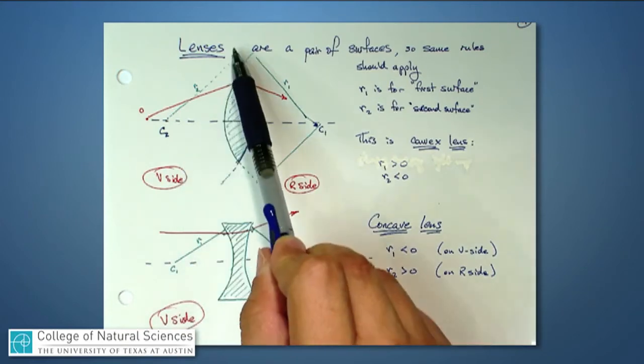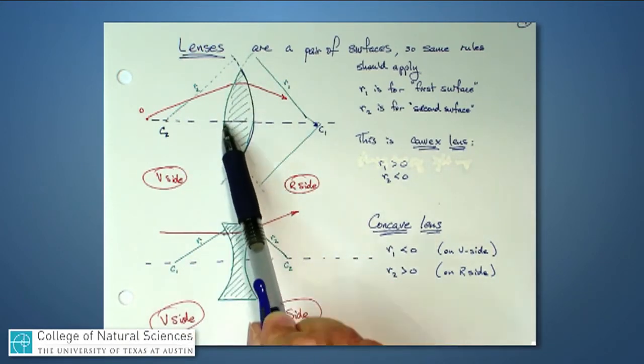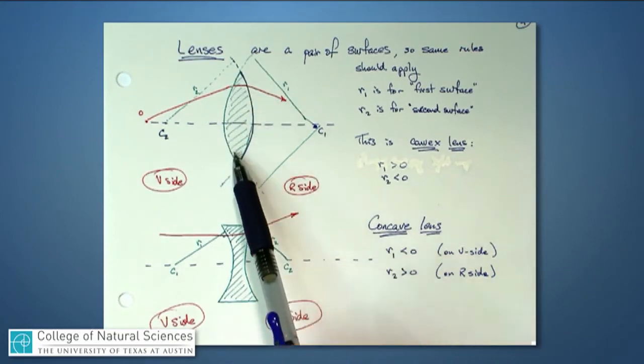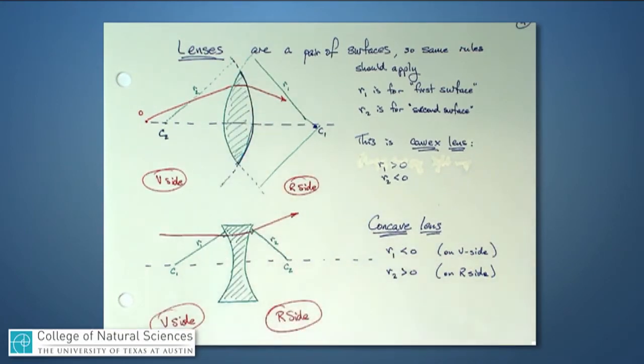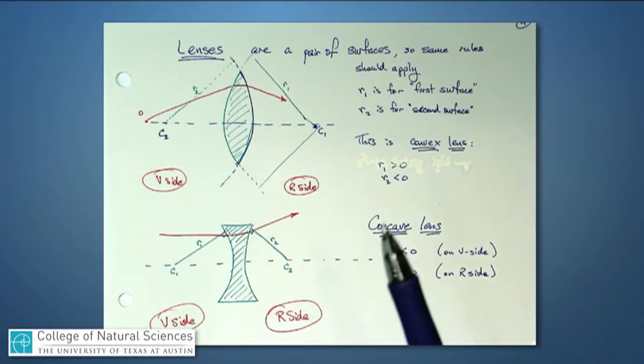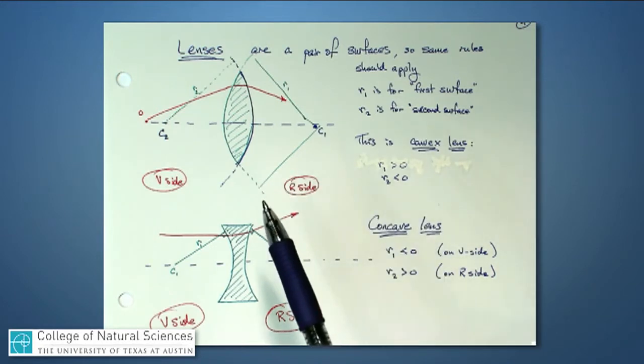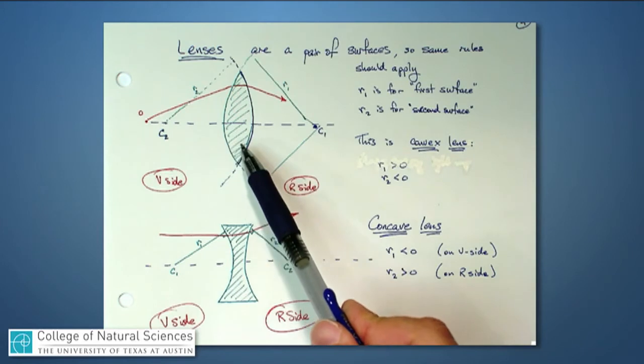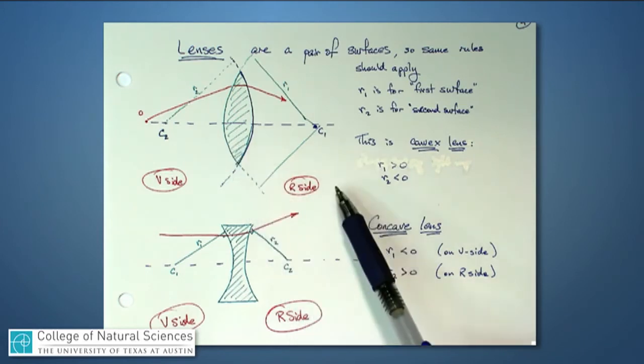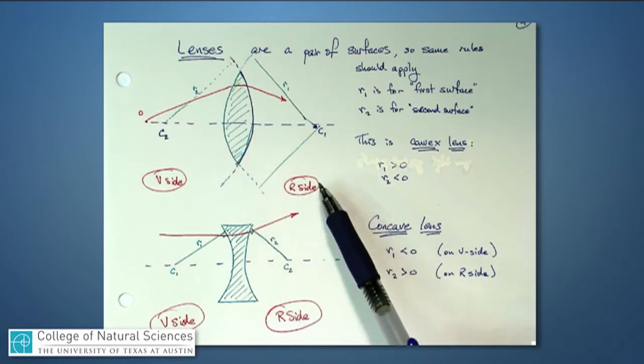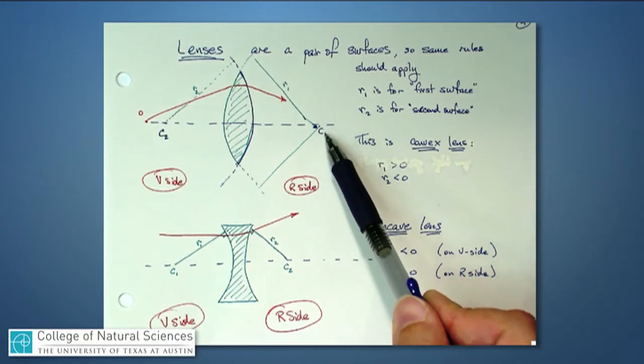So let's go through the sign conventions. We will have a curved surface right here, and this is called the first surface. We call it that because that's the first surface that the light goes through. Then we must define a radius of curvature for that first surface, and we call that R1.